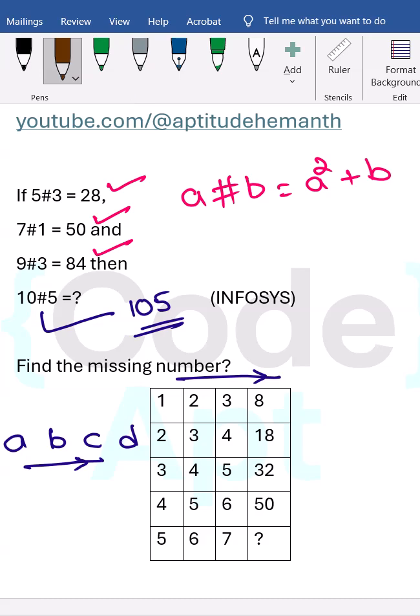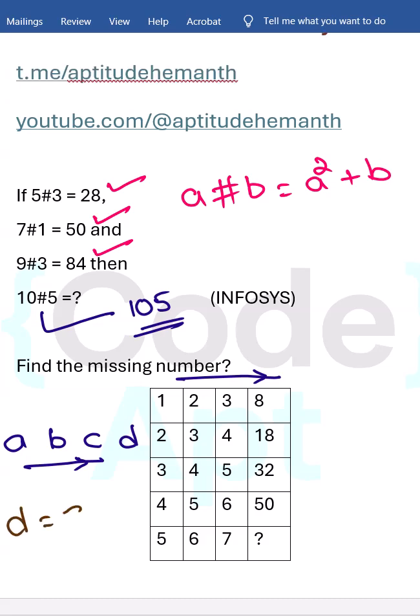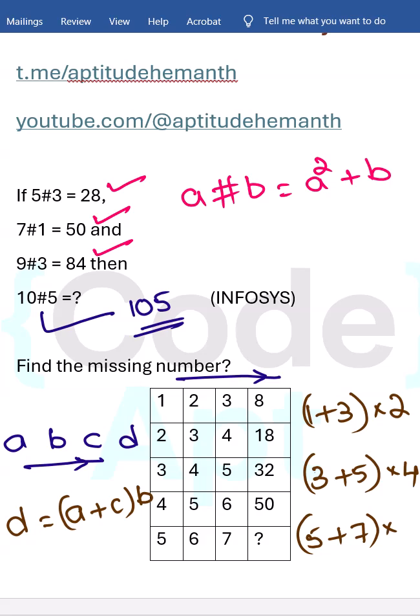Here I designed like d equals a plus c into b. 1 plus 3 multiplied by 2 is 8. Here 3 plus 5, 8 multiplied by 4 is 32. Similarly your answer is 5 plus 7, 12 multiplied by 6 is nothing but equal to 72. Answer is 72.